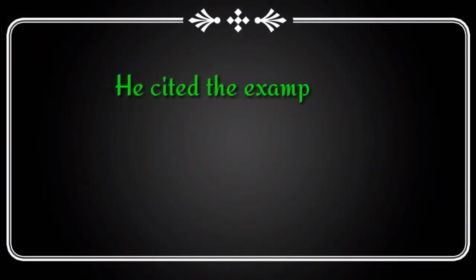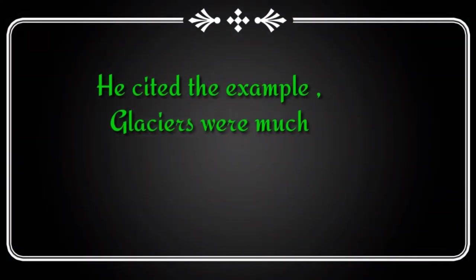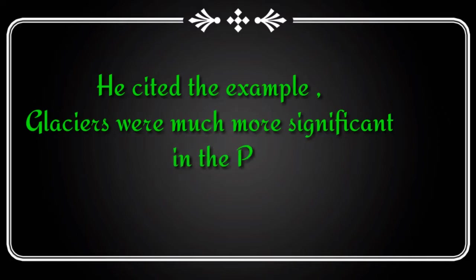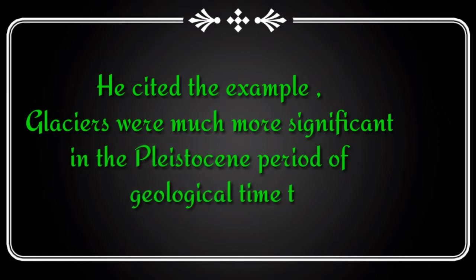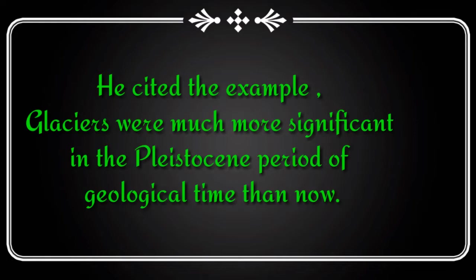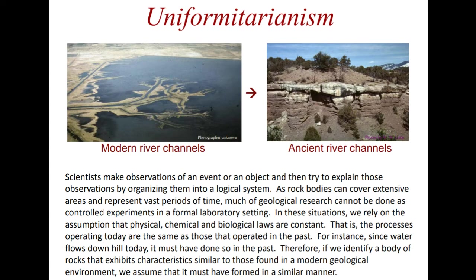James Hutton cited the following example: glaciers were much more significant in the Pleistocene period of geological time than now. This was the first fundamental concept of geomorphology, based on uniformitarianism. Now coming to the second fundamental concept in geomorphology.